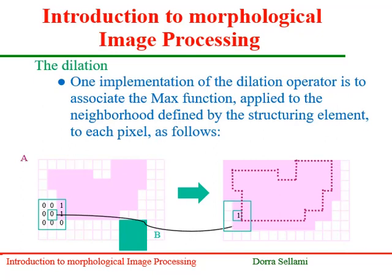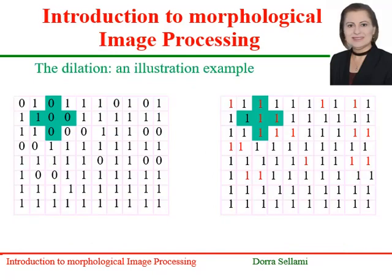Adopting the same functional approach in defining mathematical morphology operators, we consider one implementation of the dilation operator defined by the max function, applied to the neighborhood identified by the structuring element to each pixel. By applying the max function, the surrounding dark pixels will take new brighter values, and we dilate the set A as can be seen. Here is an illustration example of the dilation operation applied to the binary matrix. The red pixels are modified because they are surrounded by brighter pixels.